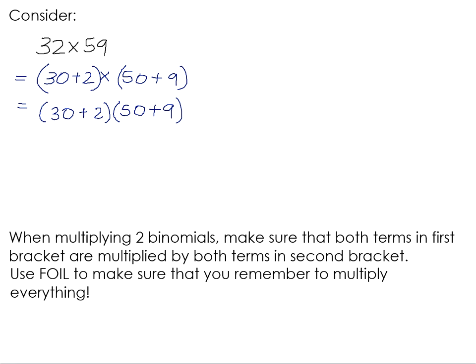If you want to multiply everything by each other, you're going to need to multiply the 30 by the 50 and the 2 by the 50. Then you've multiplied both of these numbers by 50. In order to complete this, you're also going to need to multiply both numbers by the 9.